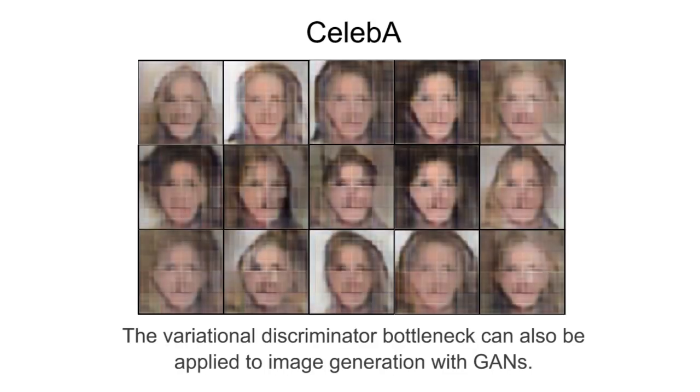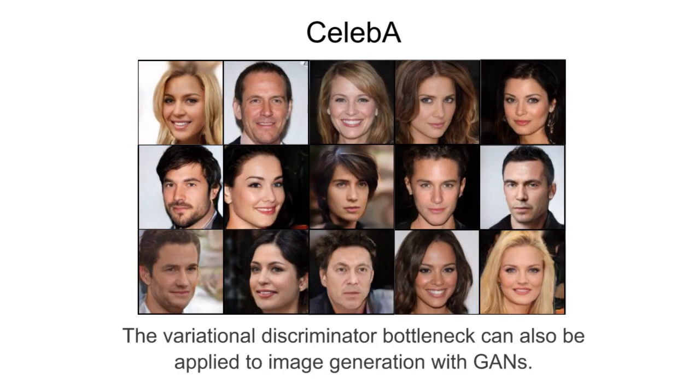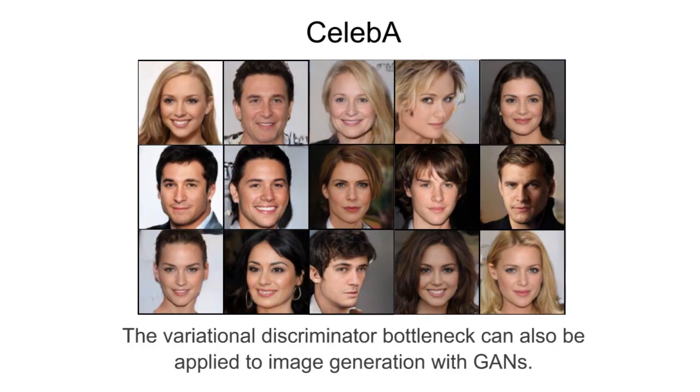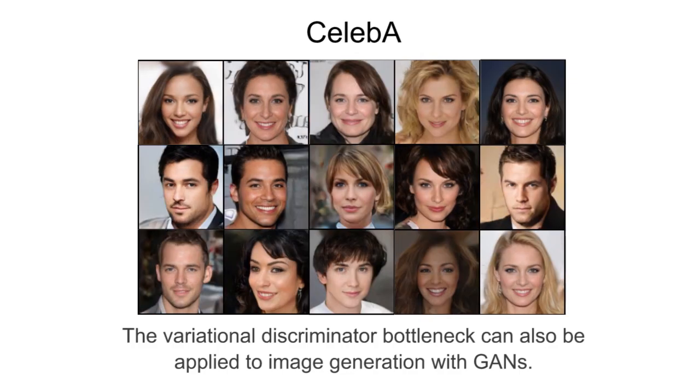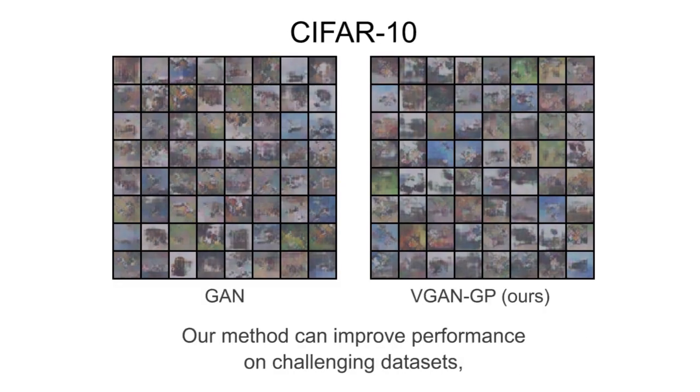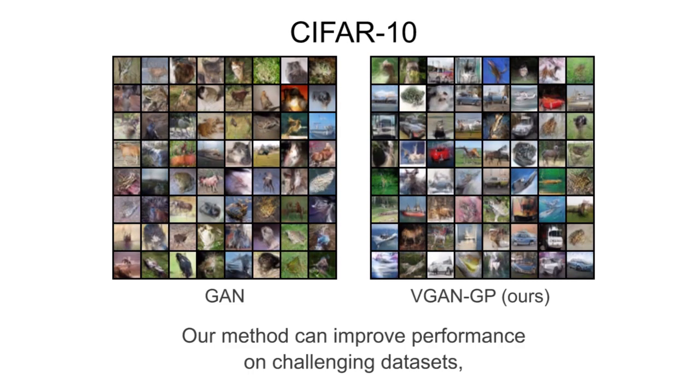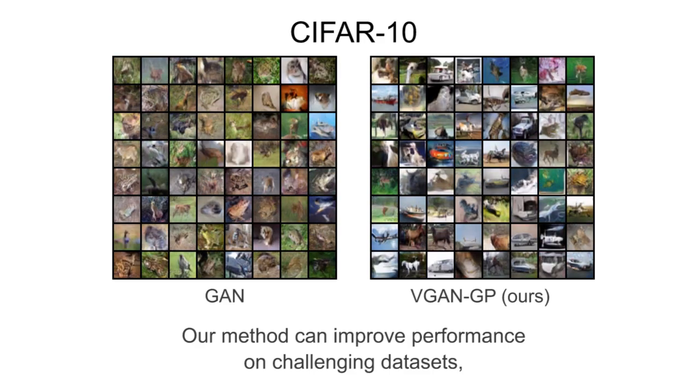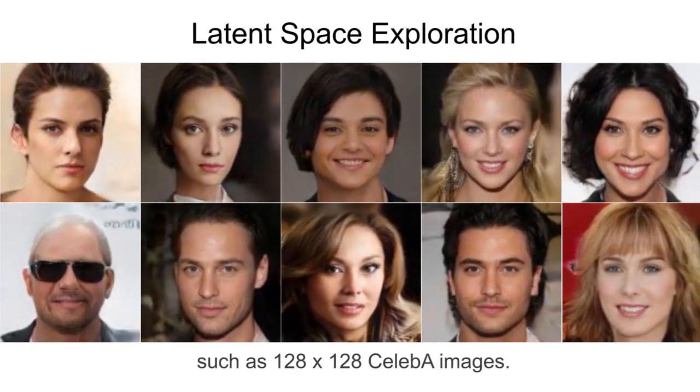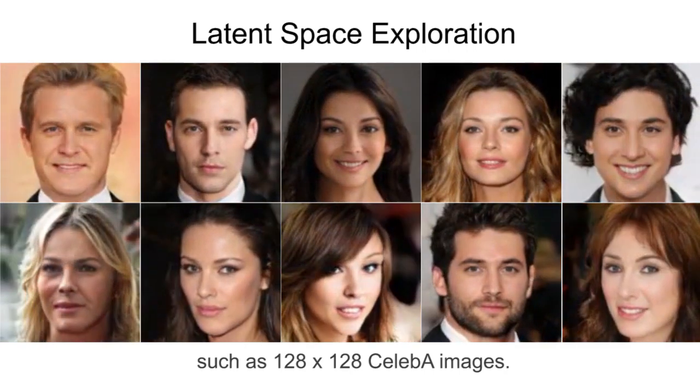The variational discriminator bottleneck can also be applied to image generation with GANs. Our method can improve performance on challenging datasets, such as 128 by 128 Celeb A images.